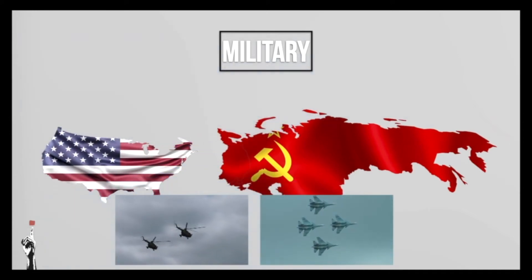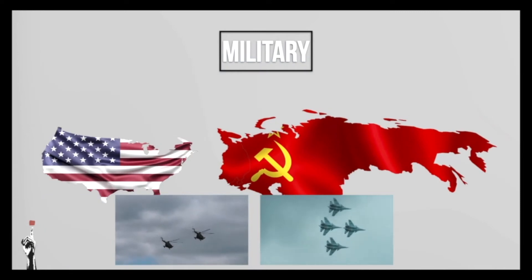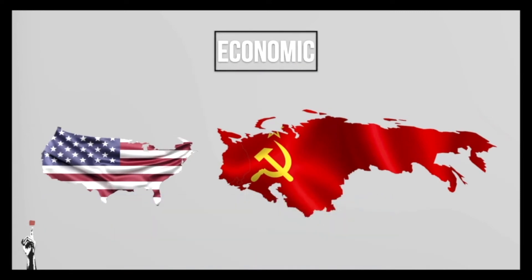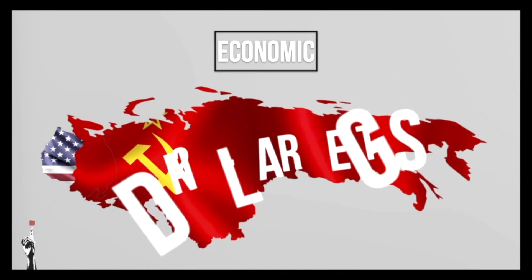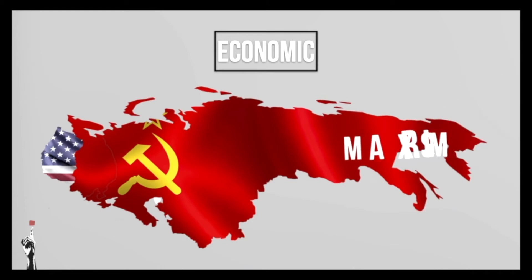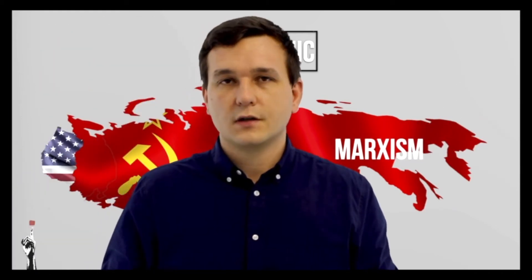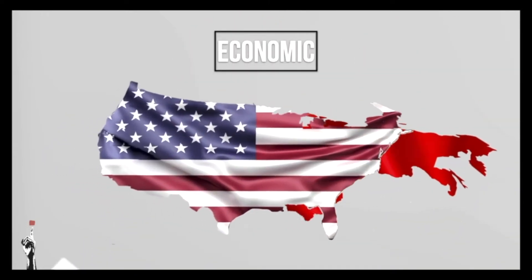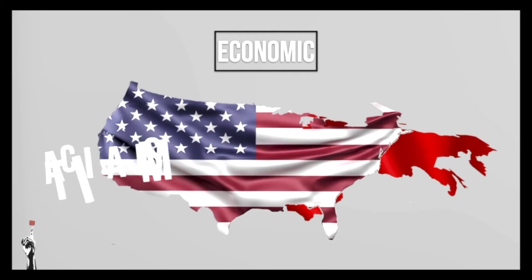Now let's look at the two nations economically. The Soviet Union was the second largest economy in the whole world and it was based on Marxism. It was also generally self-sufficient — not dependent on imports from other countries. The USA had the largest economy in the world and had loads of imports and exports. Their economy is based on the free market system of supply and demand.